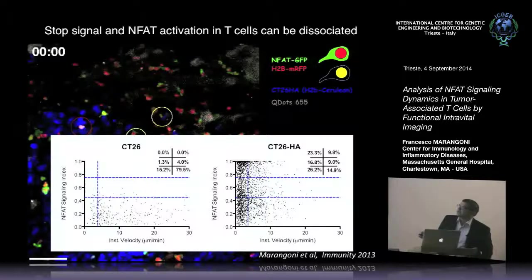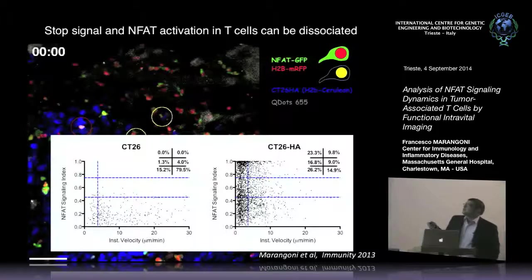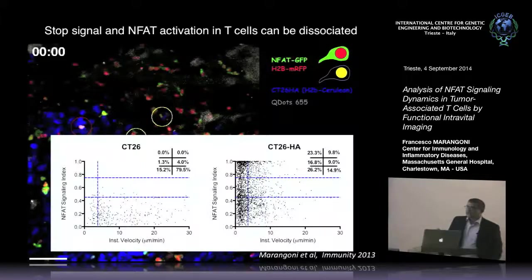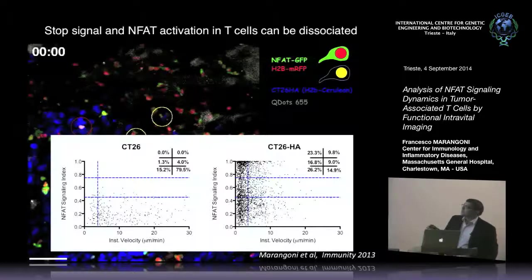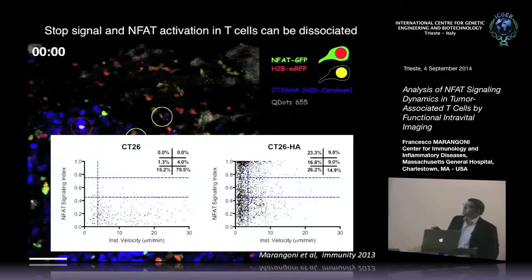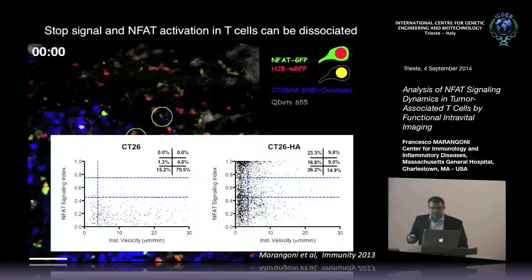When the tumor expresses the cognate antigen, you see all combinations: cells that move no matter what, cells that are arrested but don't signal, cells that are signaling yet arrested, and finally cells that are signaling and moving — which is a good step towards our hypothesis. Yet we have to rule out something before making strong conclusions: that the behavior of these signaling-and-moving cells is due to receiving activatory signals on the run through the so-called immune kinapsis.